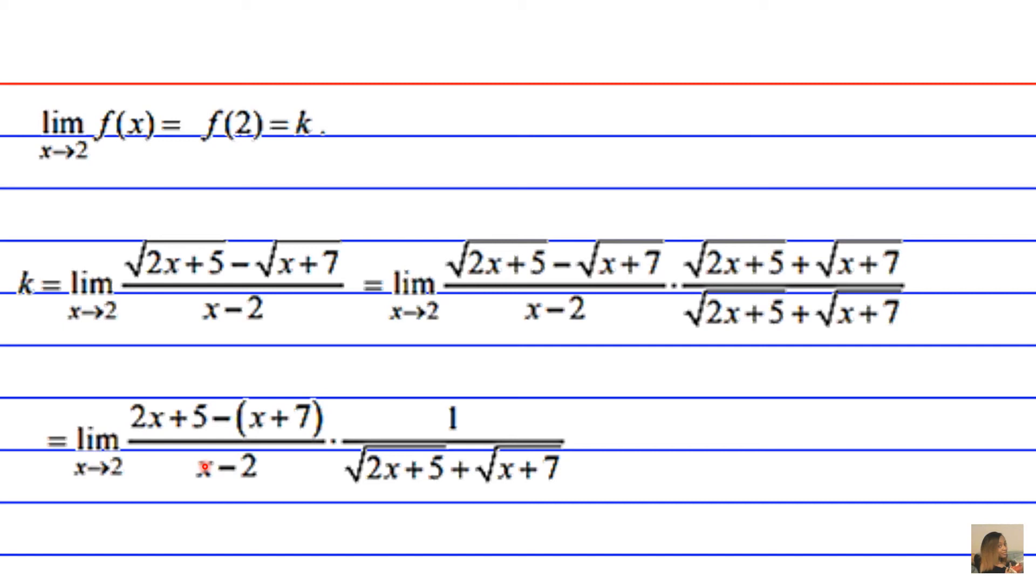Because remember, x is never actually 2, it's always approaching 2, so it could be, I don't know, 2.01 or 1.99. So something really tiny in the numerator over something really tiny in the denominator is just going to give you 1. So you can essentially just get rid of this.